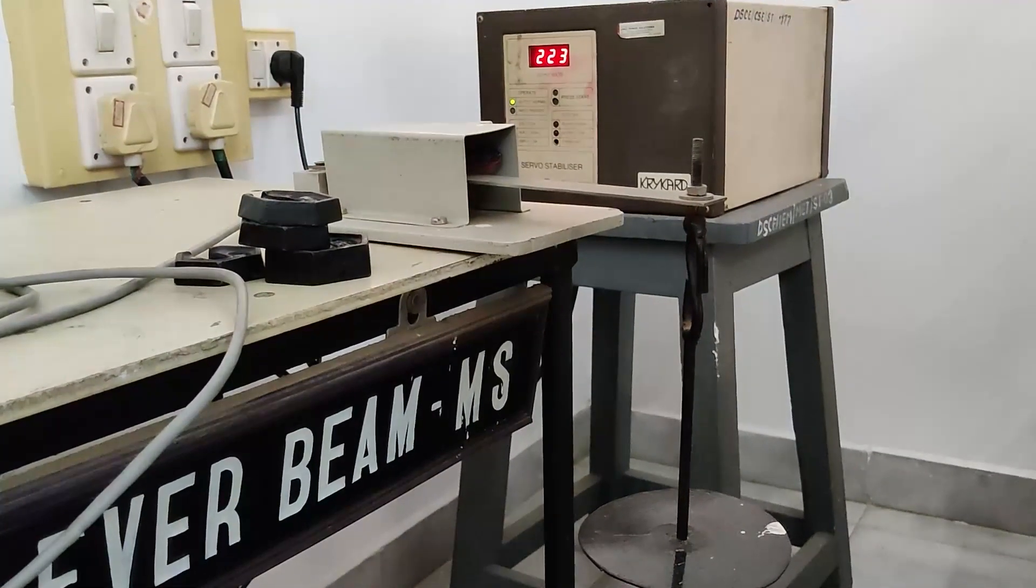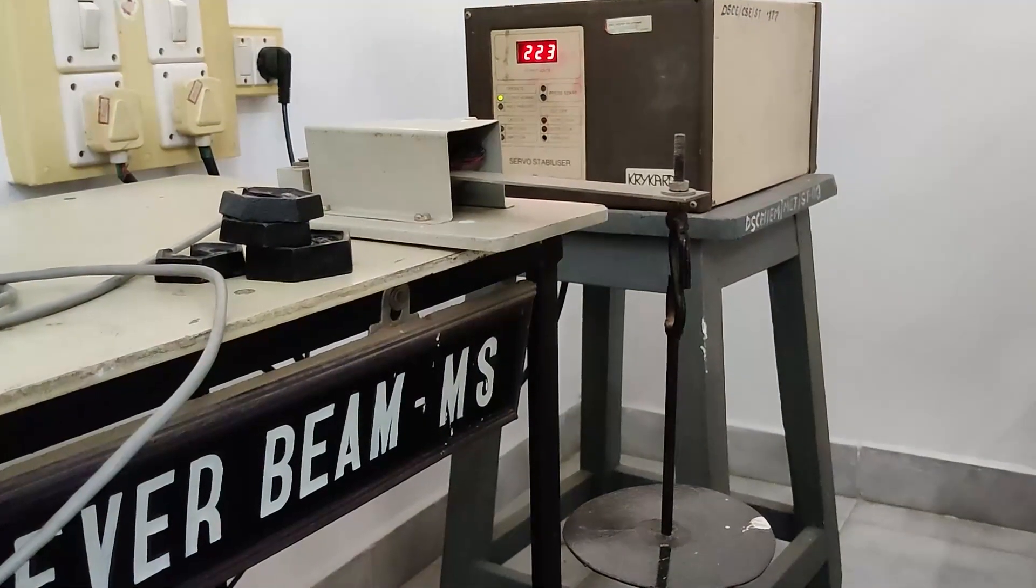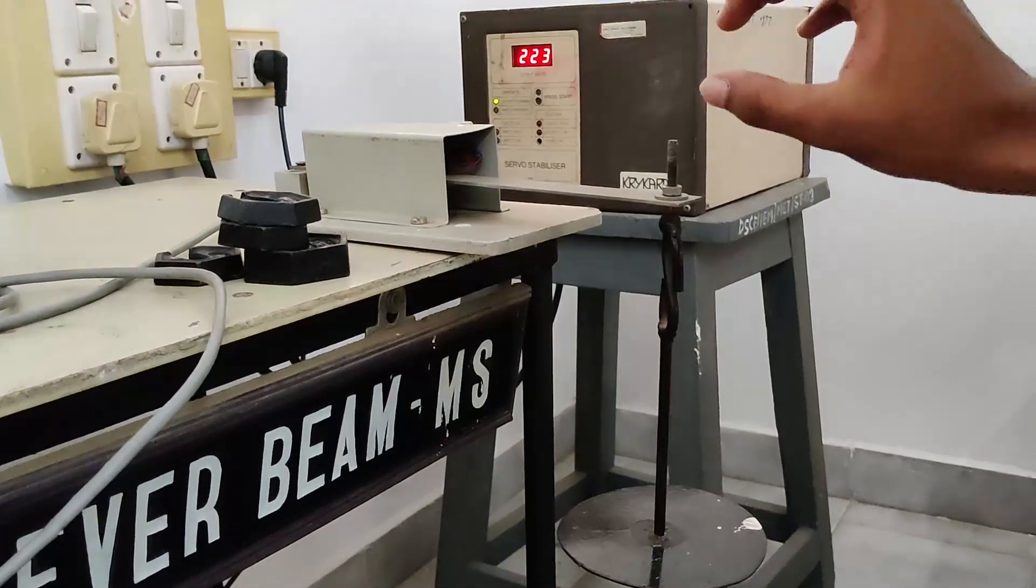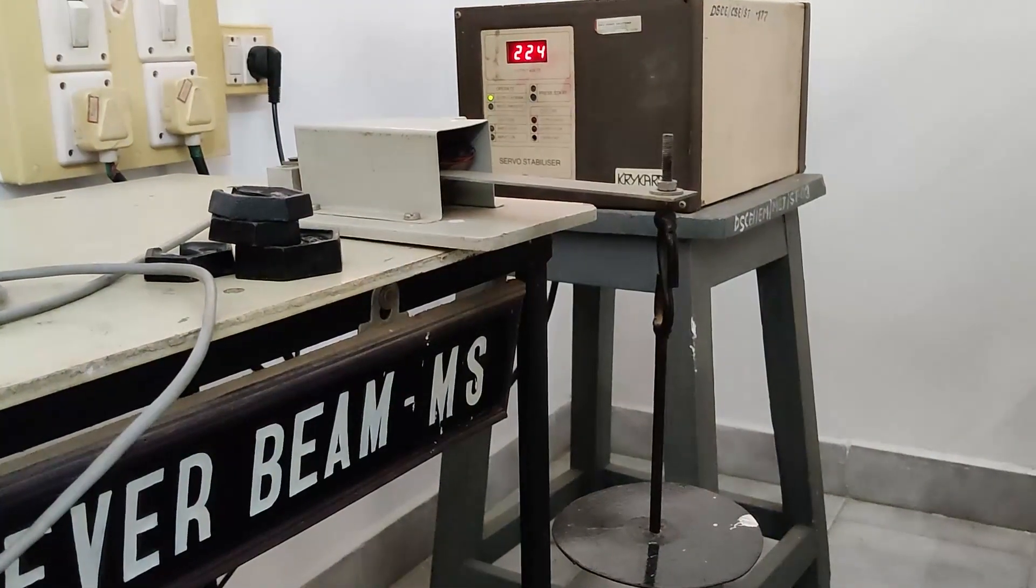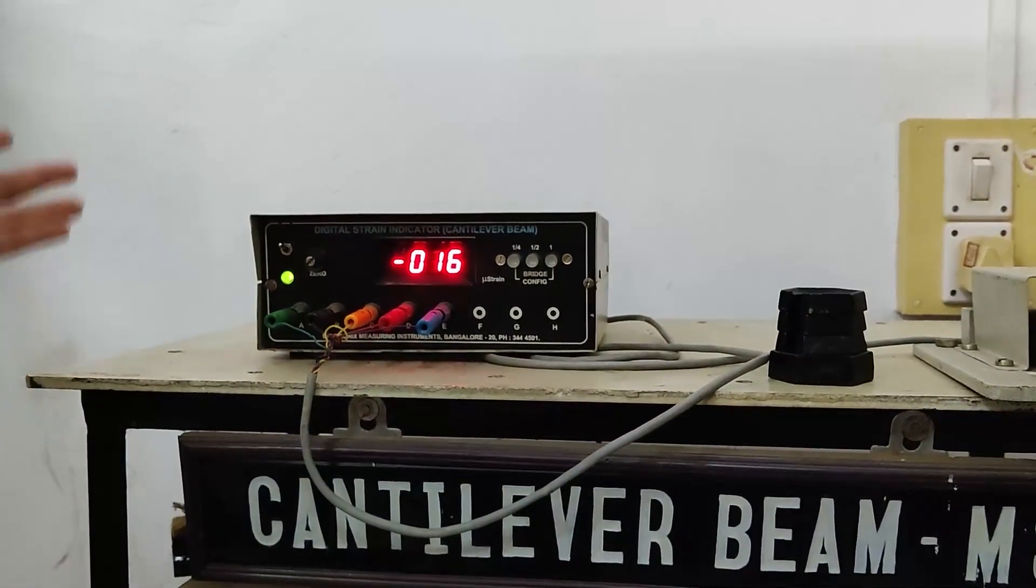Inside this, it is a mild steel specimen and the length is 250 millimeter and breadth is 25 millimeter and the thickness of this mild steel specimen is 1.6 millimeter.